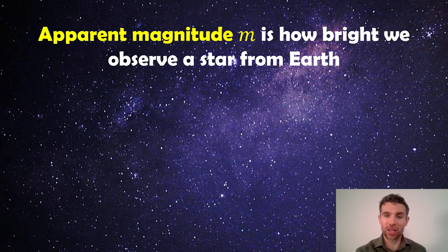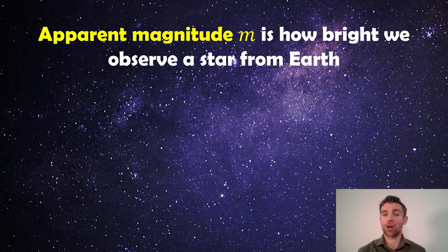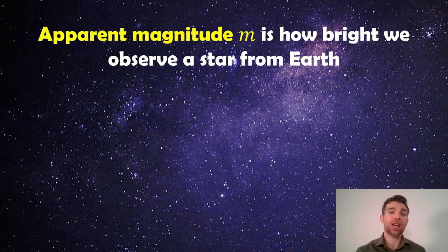But all of those stars there are different distances from us. So we could have a star that is very bright, but it could just be that it's very close. It could be a small star very close, or it could be a large star much further away. The apparent magnitude is just how bright we actually see the star from our observation point of Earth.